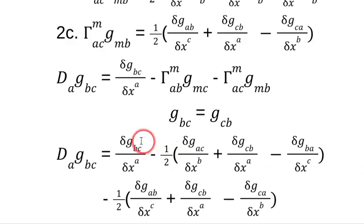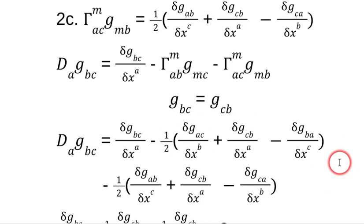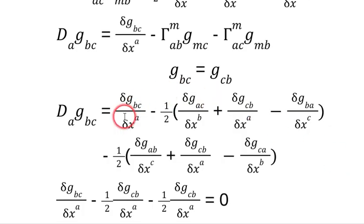So here's our whole shebang. Now, what we want to do is start gathering up like terms. So let's look at the a's first. So here's partial x^a, here's partial x^a, and here's partial x^a. So we've got minus 1 half, minus 1 half. That gives us a negative 1 of g_cb with respect to x^a. And remember what we just talked about. bc is the same as cb. So this is 0.